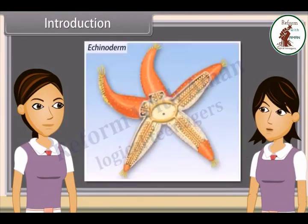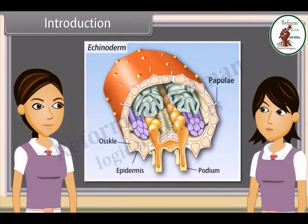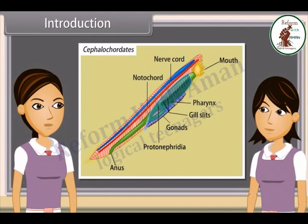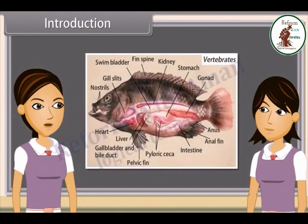Similarly, in echinoderms, excretory organs are dermal papulae, while in urochordates it is neural gland, and in cephalochordates it is protonephridia. In vertebrates, excretory organs are one pair of kidneys.